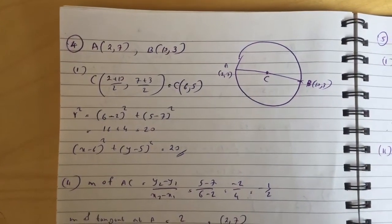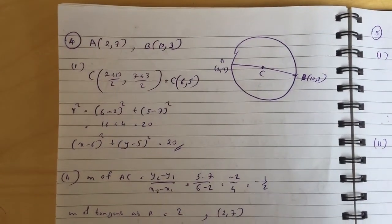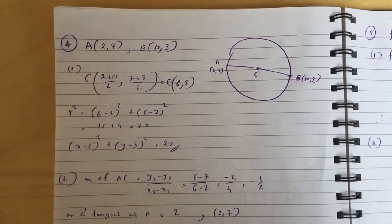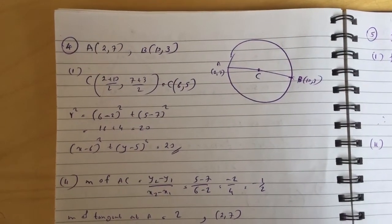So the midpoint of the circle is (6,5), radius squared is 20, so the equation is (x - 6)² plus (y - 5)² equals 20.